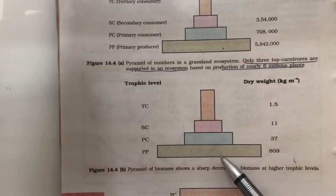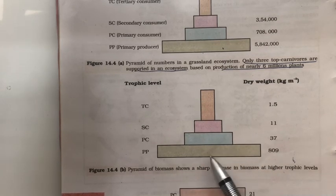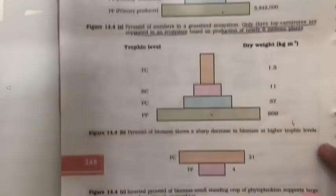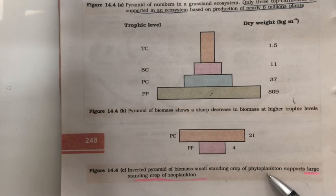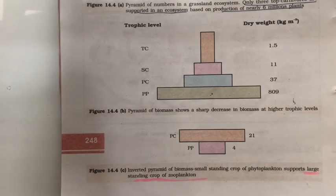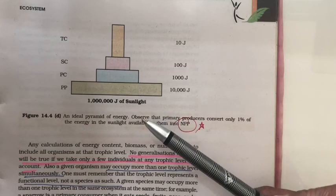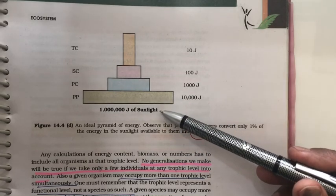A pyramid of biomass is typically upright — the biomass at the primary producer level is greater than at higher trophic levels. However, it can be inverted in aquatic ecosystems, where a smaller biomass of phytoplankton supports a larger standing crop of zooplankton. The pyramid of energy, however, can never be inverted, because energy cannot flow in the opposite direction and cannot be created or destroyed. The pyramid of energy will always be upright.